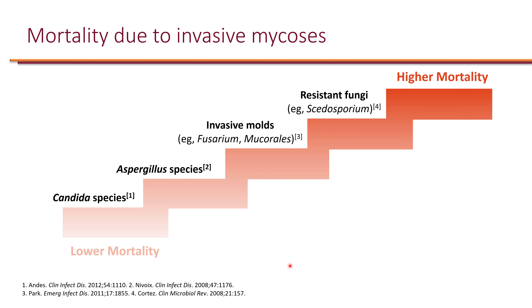Now, let's take a look at mortality due to invasive mycoses. Candida species typically cause the least amount of mortality, but still pretty significant — so 10 to 20% mortality rate in invasive candidiasis. And the rate of mortality goes up, especially once we get to the mold. So aspergillus species, you get significantly higher —